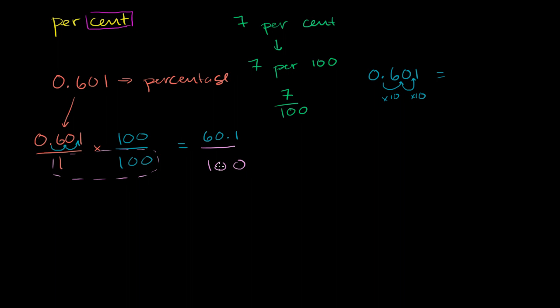But now we have it in the form we like. We have 60.1 over 100. Or you could rewrite this. This is the same thing as 60.1 per 100.